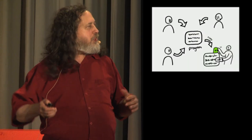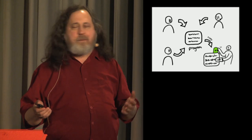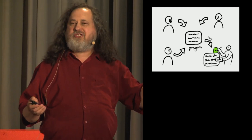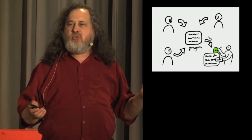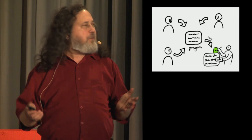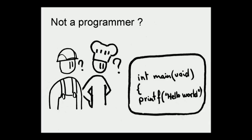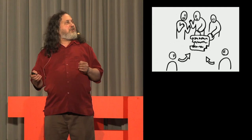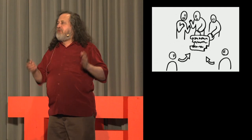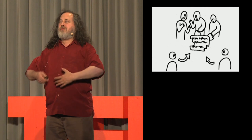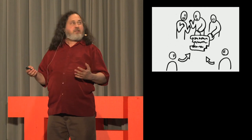With those two freedoms, each user separately can make a copy and start changing it to make it do what she wants — that's individual control. But what if you're not a programmer? You look at the source code and you don't understand it. Individual control isn't enough. We also need collective control, which means any group of users are free to work together to adapt the program to what they want.